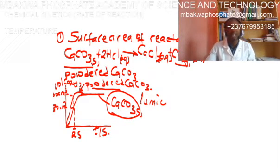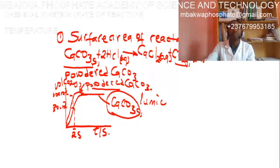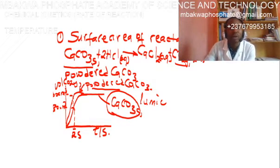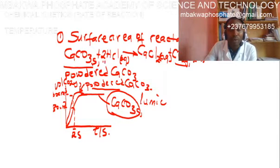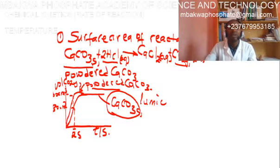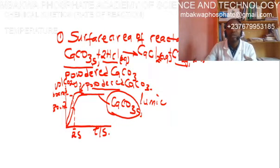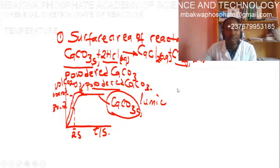If you are asked to use an example to explain how surface area of a reactant influences the rate of a chemical reaction, you can use the reaction between calcium carbonate and hydrochloric acid. Note that we cannot talk about surface area for hydrochloric acid since it is a liquid — for liquids we talk about concentration. We will now look at concentration and pressure as the next factor.